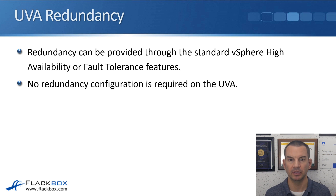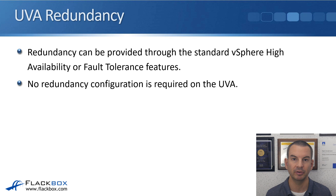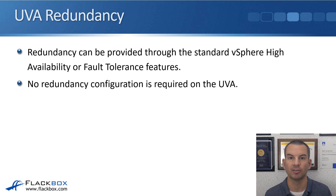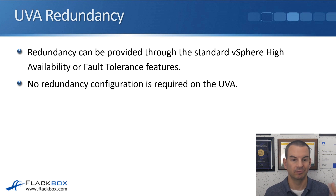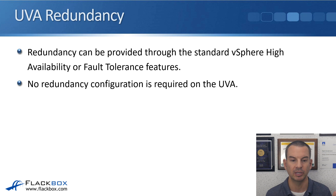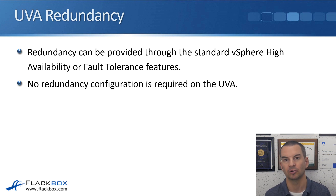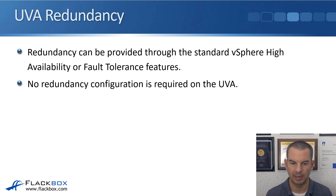Redundancy for the VSC can be provided through the standard vSphere high availability or fault tolerance features. Since the VSC runs as a virtual machine, you can use VMware's built-in HA and fault tolerance to provide redundancy. No extra or special redundancy configuration is required on the UVA itself — just use the standard settings inside VMware.